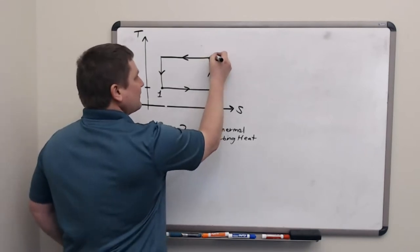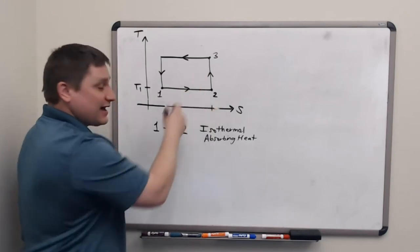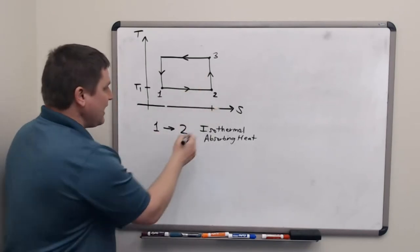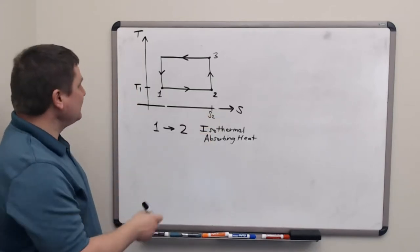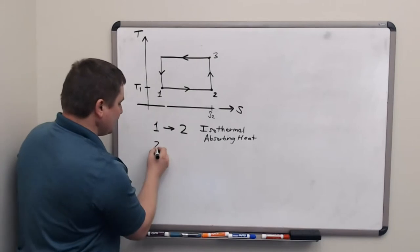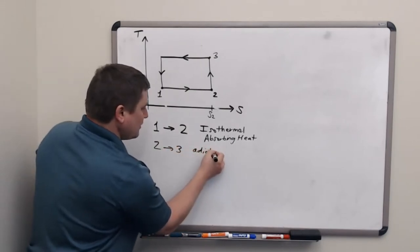On the next leg of the cycle, from 2 to 3, we are keeping a constant entropy, S2. So that's an adiabatic heating. We raise our temperature adiabatically.